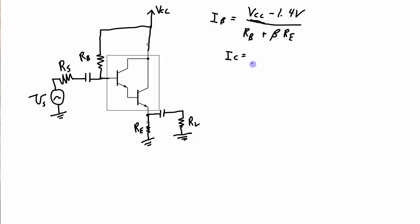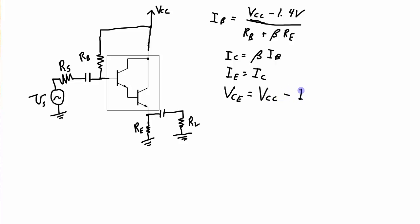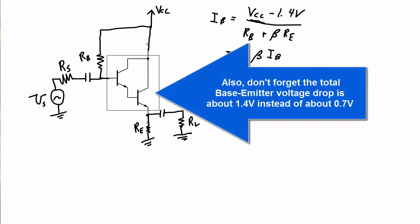IC is beta·IB, and IE is approximately IC — or beta plus 1 times IB if you prefer. VCE is going to be the voltage at the collector, which is VCC minus IE·RE. So pretty straightforward, pretty much the exact same as a regular fixed bias circuit. The only difference is the beta value is going to be much larger than if there was a single NPN transistor.